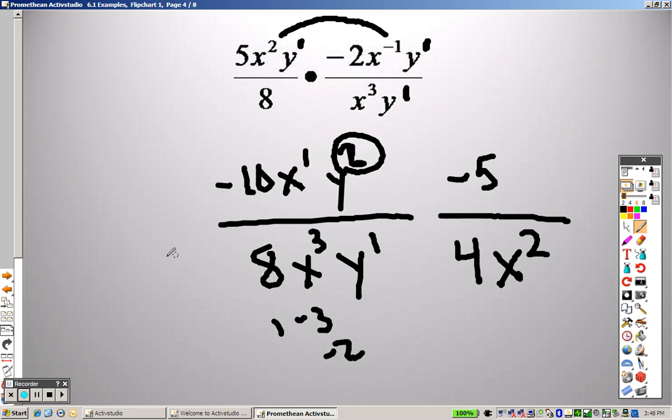So when you subtract those, 2 minus 1, you end up getting 1. So it's just a 1y on top. And there is your answer.